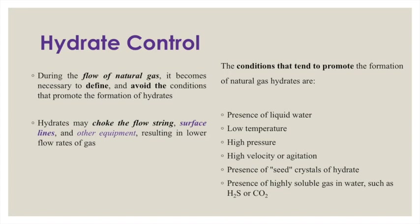For example, if hydrate would take 16 hours to form under stable conditions, it may form in only one hour under agitation. The presence of seed crystals of hydrate also allows faster nucleation. Additionally, the presence of H₂S and CO₂ are critical factors, and these gases should be minimized in pipelines so that they do not promote hydrate formation.